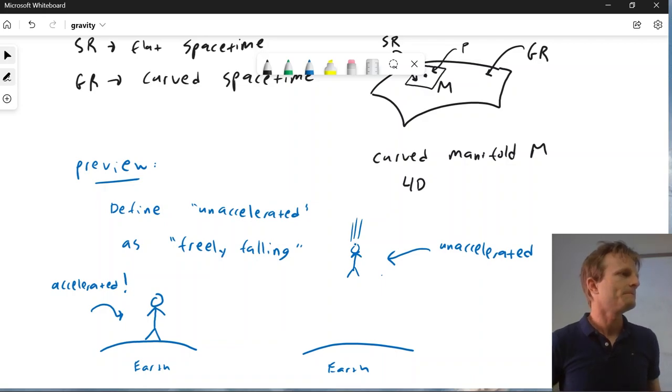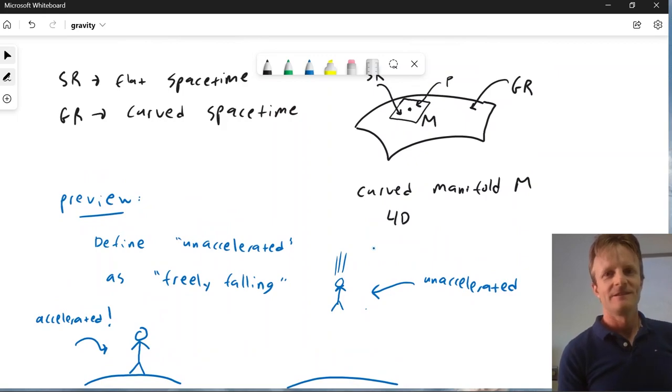When you mention a geodesic, that you're defining unaccelerated as following a straight line and following a geodesic? Straightest possible line is one way to describe a geodesic, yes. So unaccelerated is following a geodesic, which is the straightest possible trajectory. It's sort of the idea that, you know, in each of these tangent planes, spaces we set up, you really should be moving straight. And you, in some sense, the geodesics are the closest to always just moving straight. I mean, we'll define that and hopefully it will make more sense.